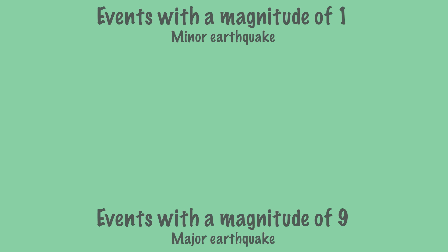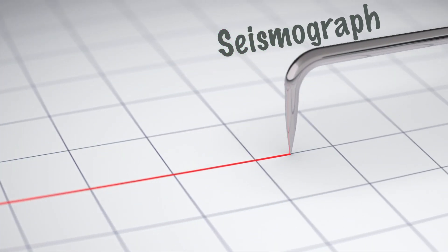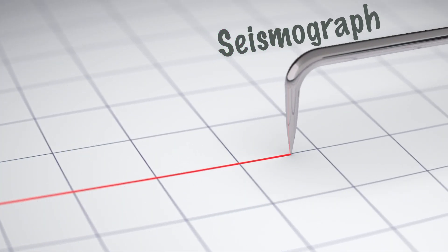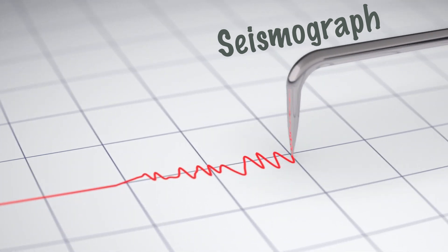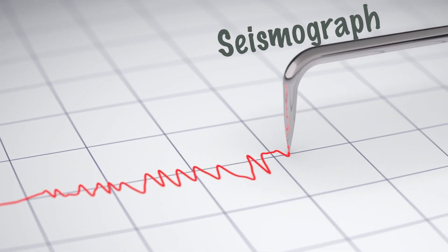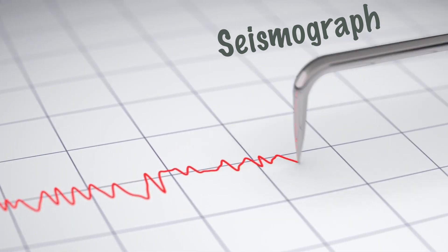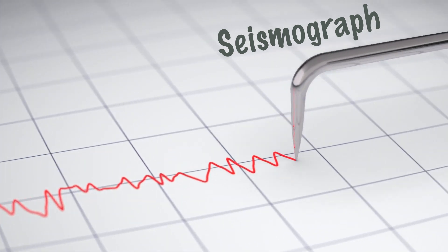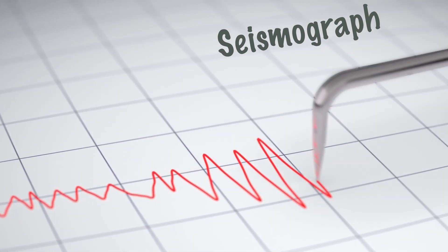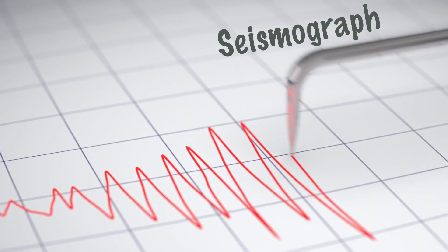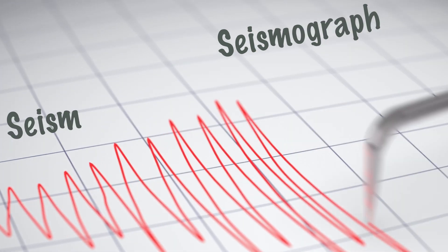But how does this work? A seismograph is a device that greatly amplifies the motion of the earth. If the earth moves, for example due to an earthquake or a bomb, the seismograph moves. This creates a drawing which is called a seismogram.